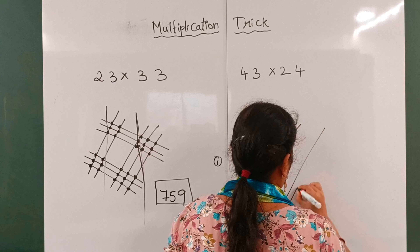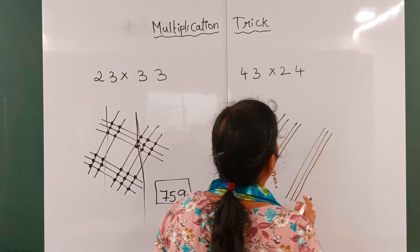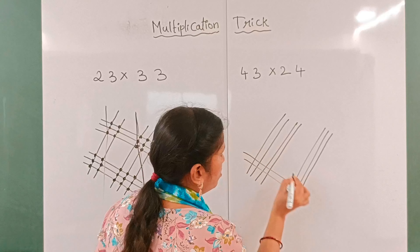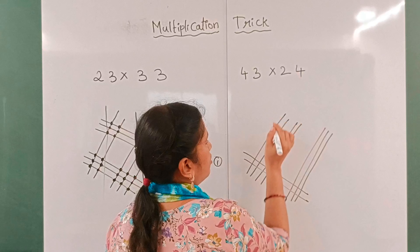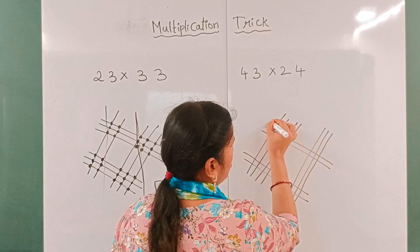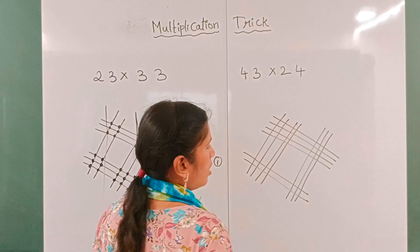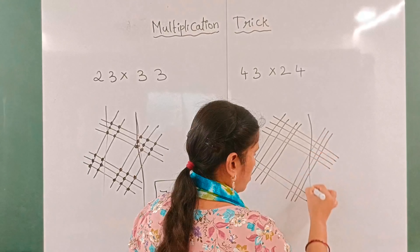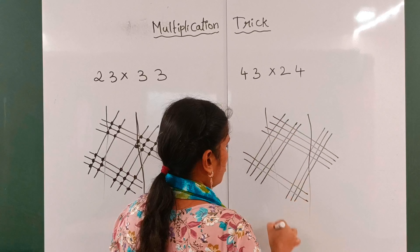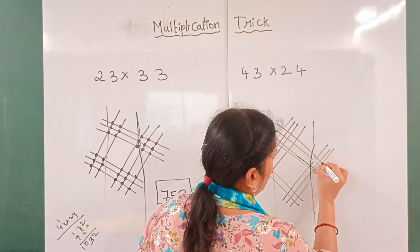Next example: 1, 2, 3, 4 lines. Next, two lines: 1, 2. Next, four lines: 1, 2, 3, 4. Divide into sections: 1, 2, 3. So I count the intersections.